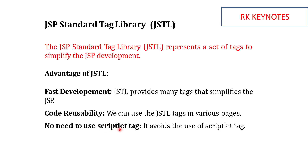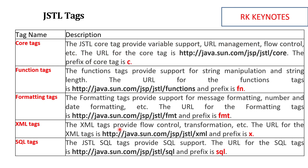With JSTL you don't need to use the scriptlet tag. Some developers say that using the scriptlet tag is not a great idea. We will explore in depth these five types of tags: core tags, function tags, formatting tags, XML tags, and SQL tags. For core tags the prefix is 'c', for function tags it's 'fn', for formatting tags it's 'fmt', for XML tags it's 'x', and for SQL tags it's 'sql'.